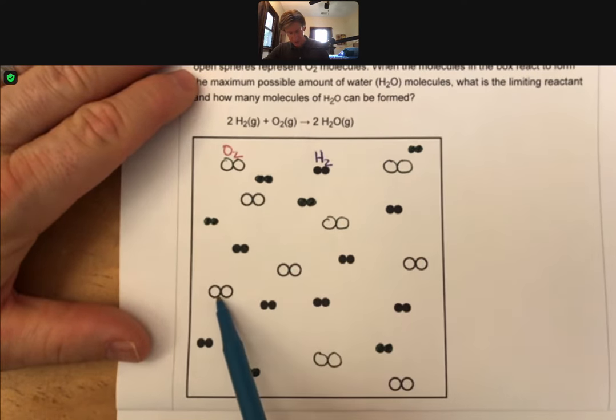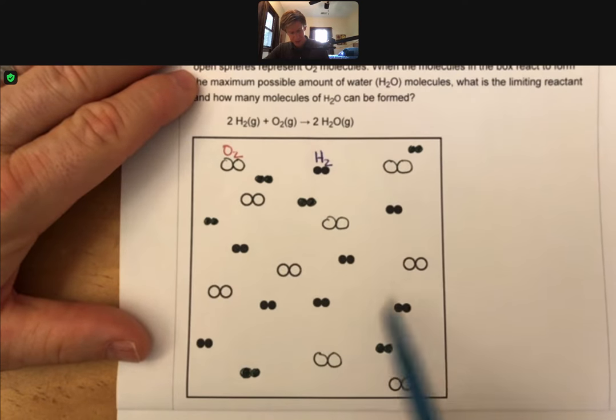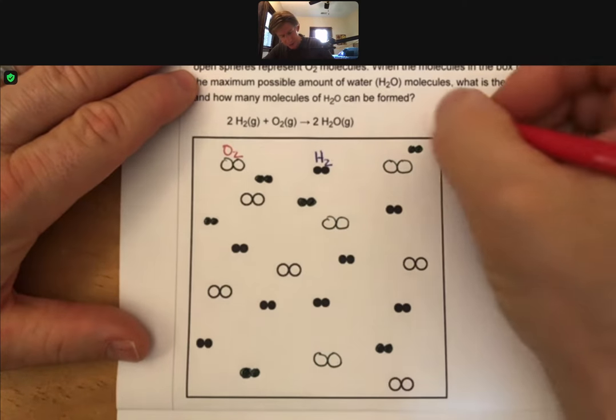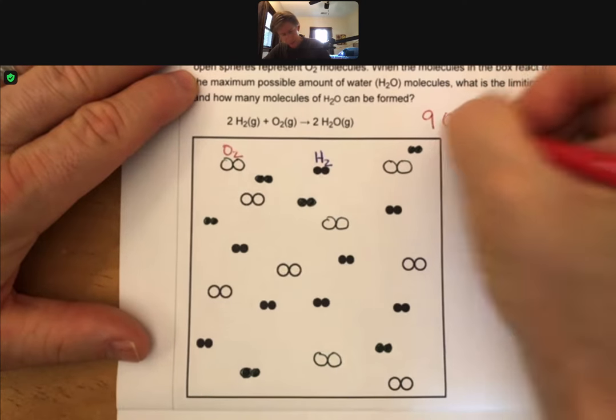So I got 1, 2, 3, 4, 5, 6, 7, 8, 9. Let's try and color code it here. I got 9 O2 molecules.